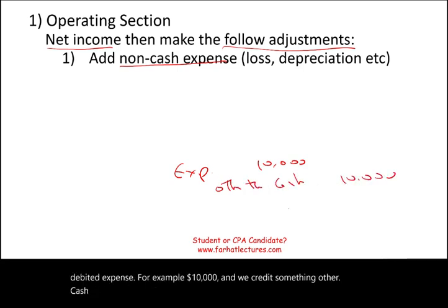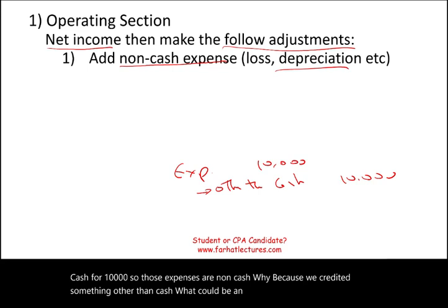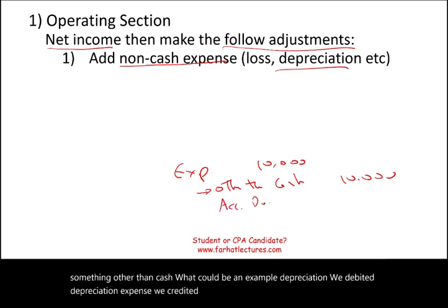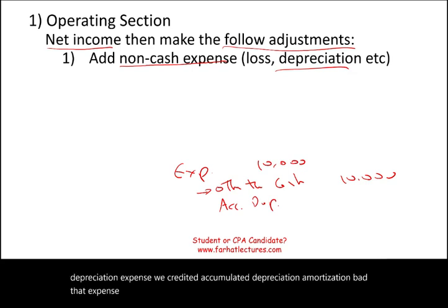Those expenses are non-cash because we credited something other than cash. Examples include depreciation — we debit depreciation expense and credit accumulated depreciation — as well as amortization and bad debt expense. Any non-cash expense you can think of.